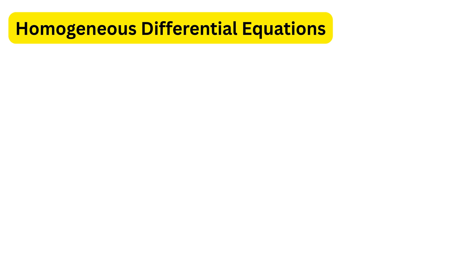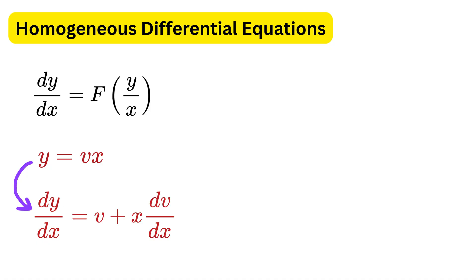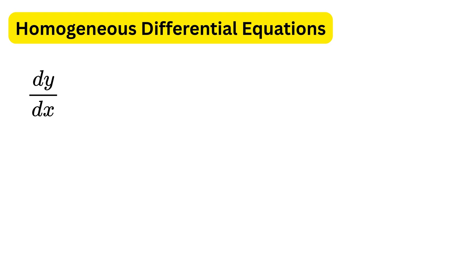Next up we have homogeneous differential equations. A differential equation is called homogeneous when the rule for the derivative depends only on the ratio of y to x. When that happens, we simply use the substitution y equals v times x, where v is a new unknown function of x. Using the product rule, this changes dy/dx into v plus x times dv/dx, and then the equation usually becomes separable in v and x.